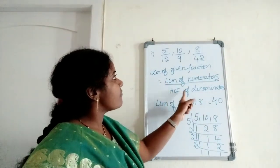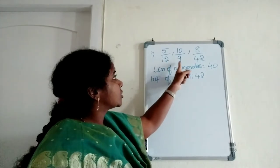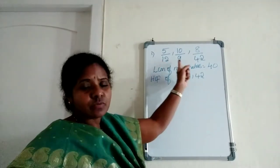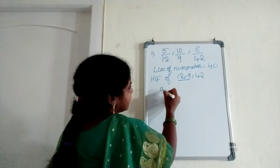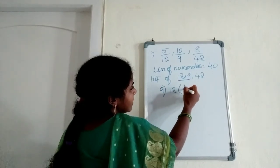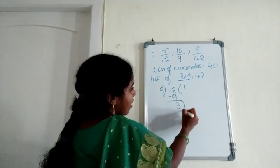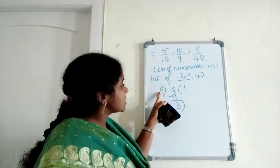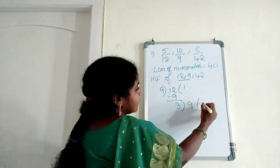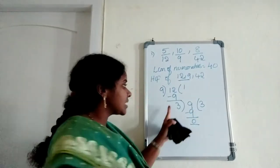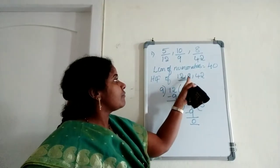Now we also have to find the HCF of the denominators: 12, 9, and 42. Using the successive division method, we first find HCF of the two numbers 12 and 9. 9 goes into 12 once with remainder 3. Then 3 goes into 9 exactly three times with remainder 0. So HCF of 12 and 9 is 3.